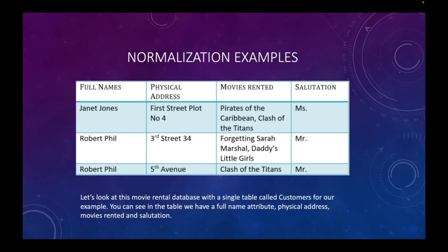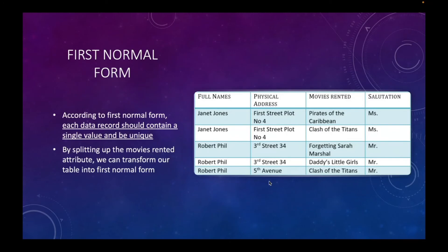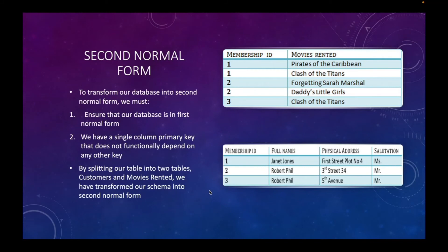Going back to review normalization examples: For First Normal Form, we're not allowed to have repeating values in a single cell — just one value per cell. The fix is to create multiple rows. For Second Normal Form, we first need to be in 1NF, and then we ensure there's no partial functional dependency on a single-column primary key — any non-key attribute must fully depend on the entire primary key.